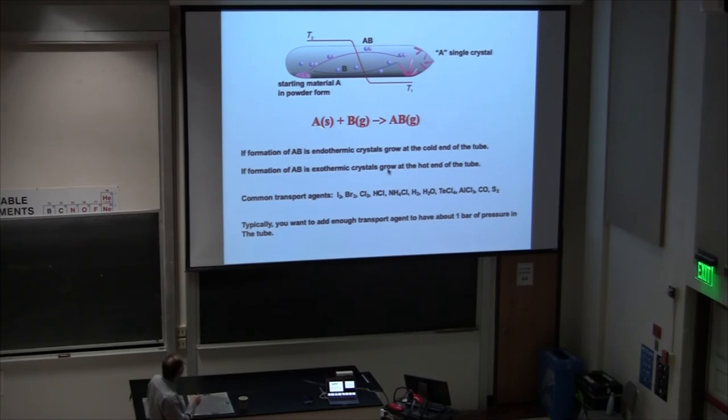The net result is you're going to end up slowly depositing material from one side of the tube to the other. If the reaction is endothermic, the crystals grow at the cold end of the tube. If the reaction is exothermic, they grow at the hot end of the tube. Most materials grow at the cold end of the tube, but there's a few materials that will go the other way.